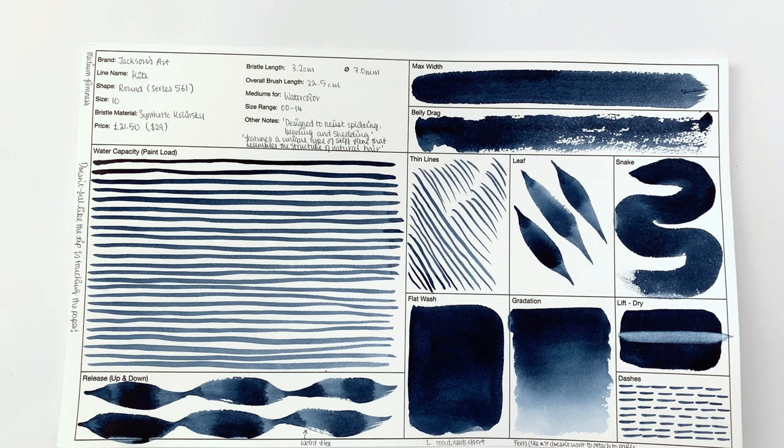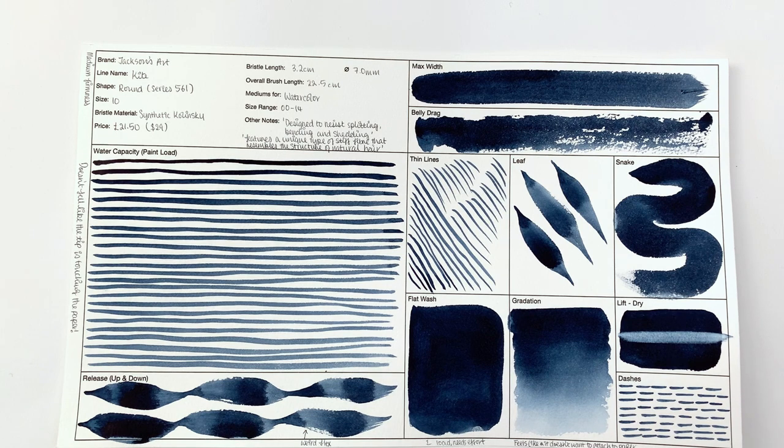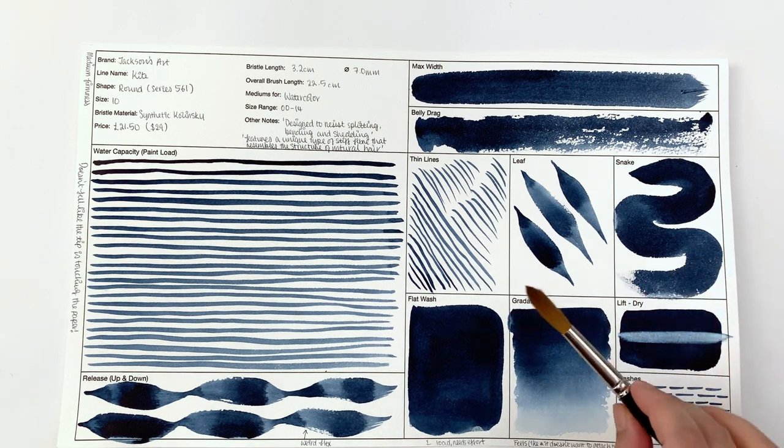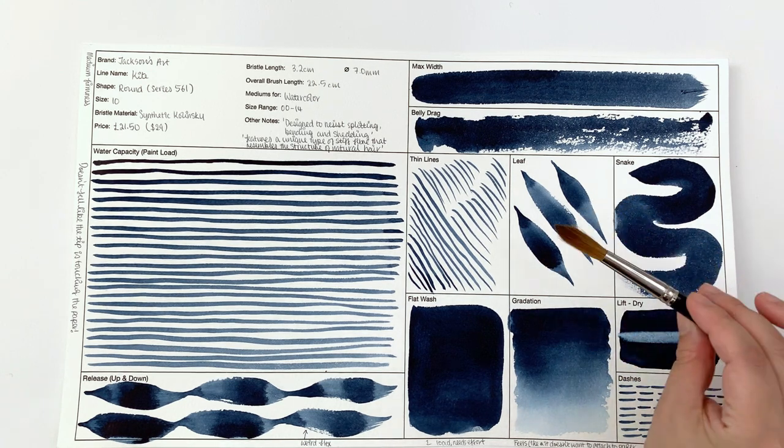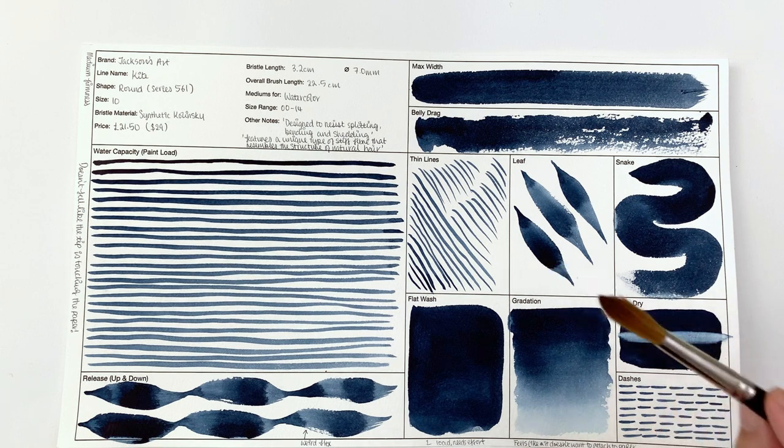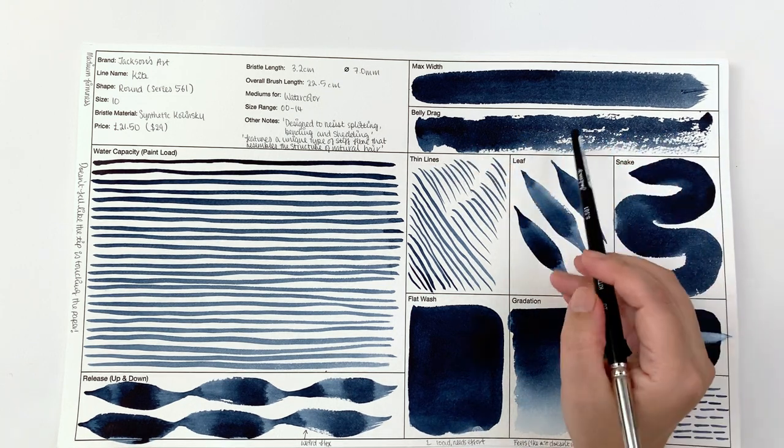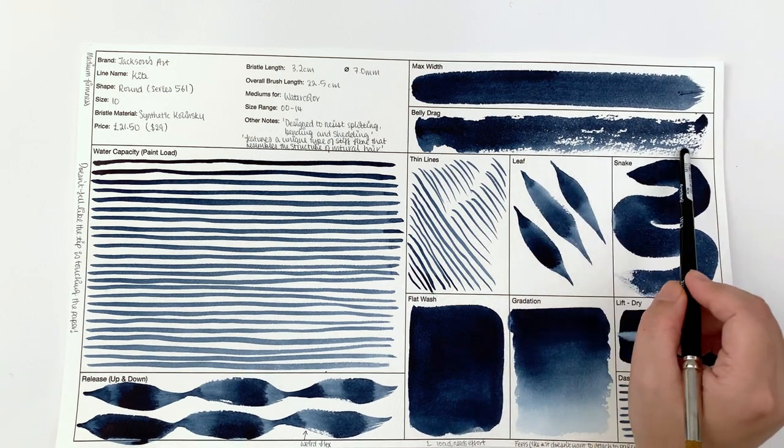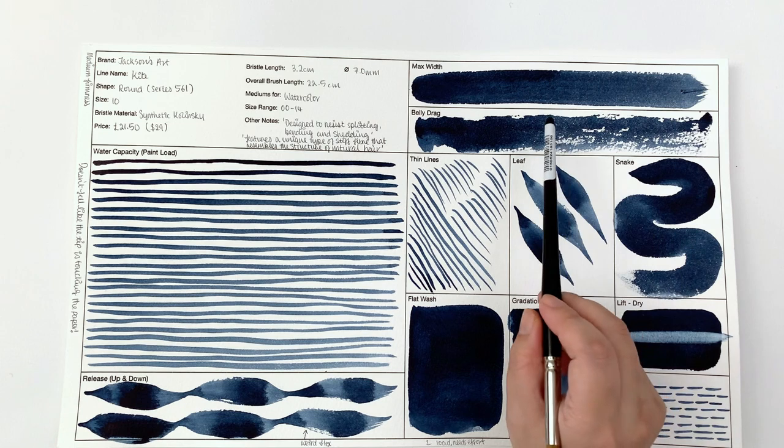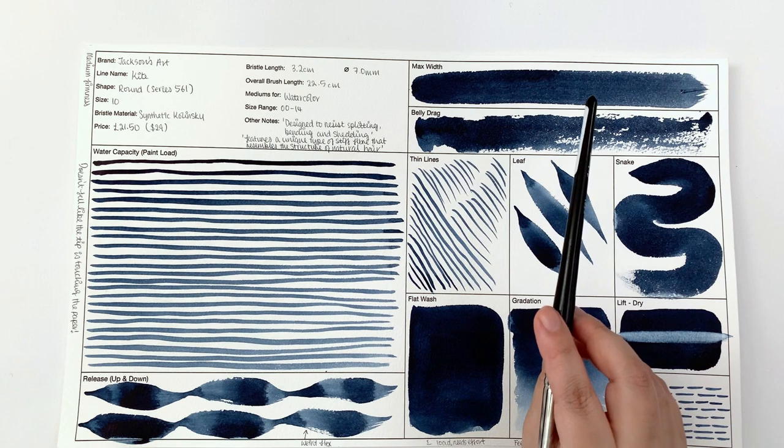That's in huge contrast to the da Vinci Casaneo, which I will link up here as well, which really just almost suctioned itself to the paper and just loved being on that paper. For me personally this is a problem because I really like the brush to make good full contact with the paper so that I don't get all these white bits coming through on the areas that should be solid.